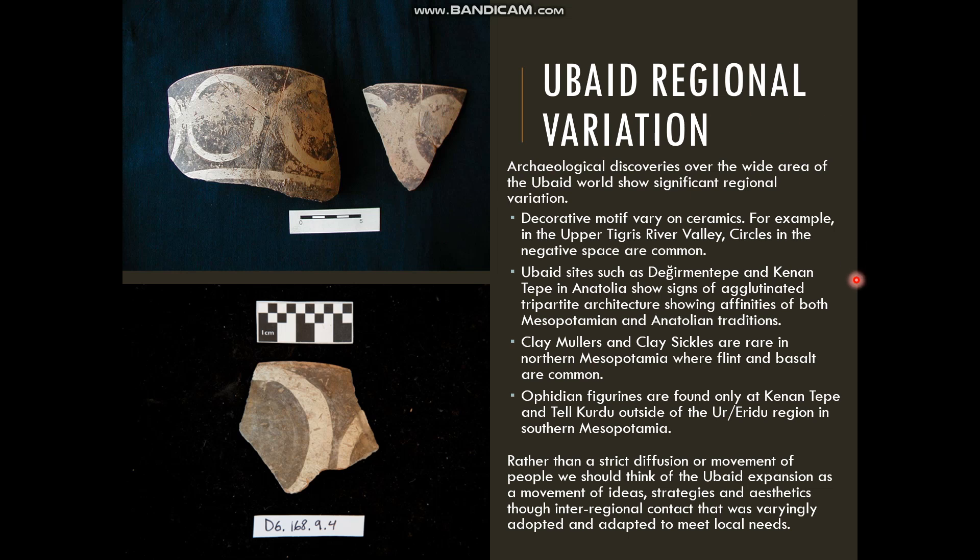At Deiraman Tepe and Kanan Tepe in Anatolia, we see signs of agglutinated tripartite architecture. They're mapping on shared walls characteristic of the Anatolian Neolithic, but building houses in a tripartite style. This takes the standard form of the Ubaid but applies it to a lived and personal experience of architectural aesthetics for Anatolian societies.